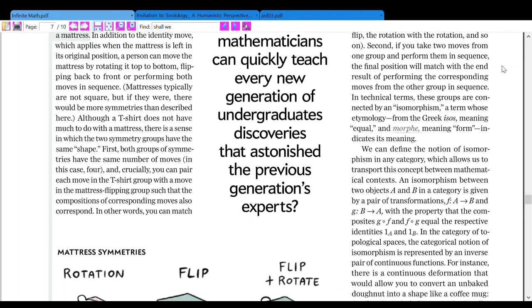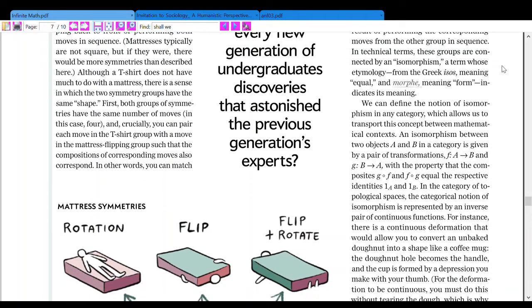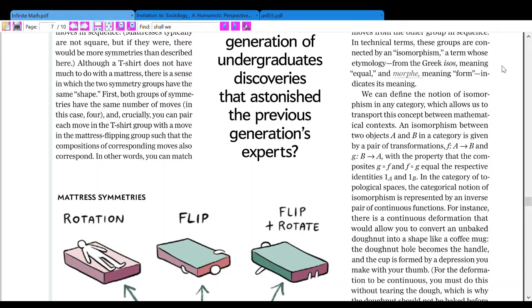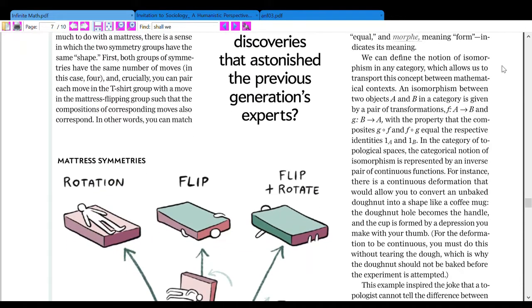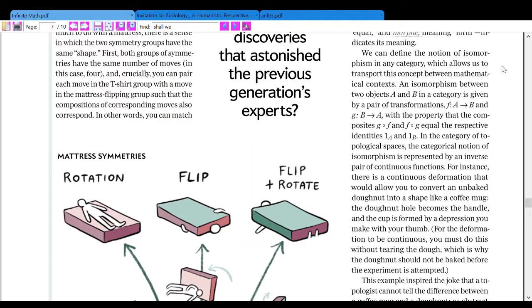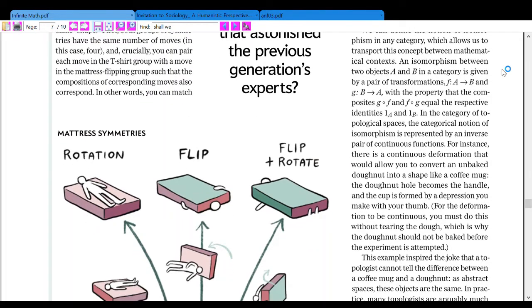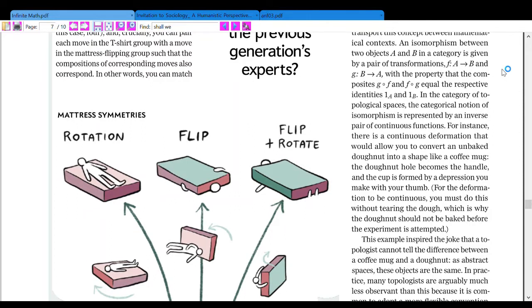In technical terms, these groups are connected by an isomorphism, a term whose etymology from the Greek isos meaning equal and morphe meaning form indicates its meaning. We can define the notion of isomorphism in any category which allows us to transport this concept between mathematical contexts. An isomorphism between two objects, A and B, in a category is given by a pair of transformations, F transforms A to B, and G transforms B to A, with the property that the composition G composed F and F composed G equal the respective identities IA and IB.